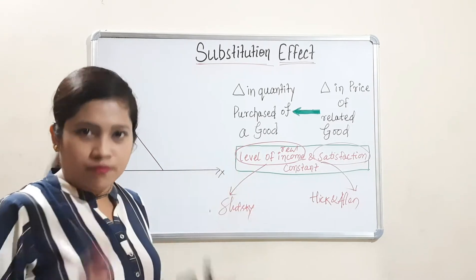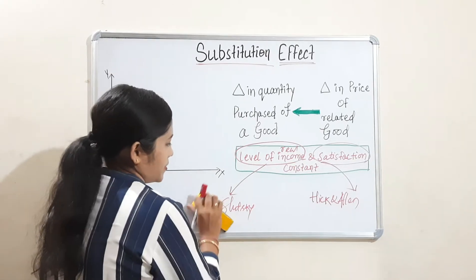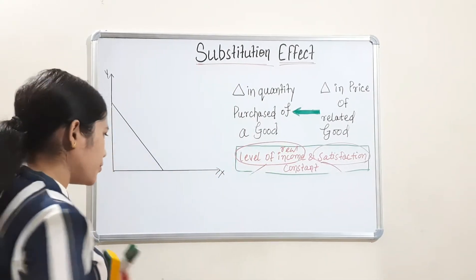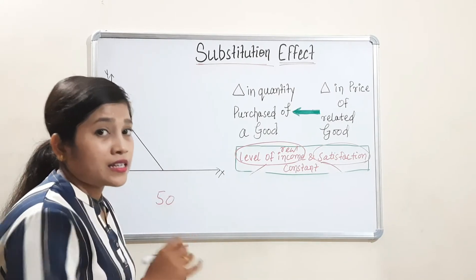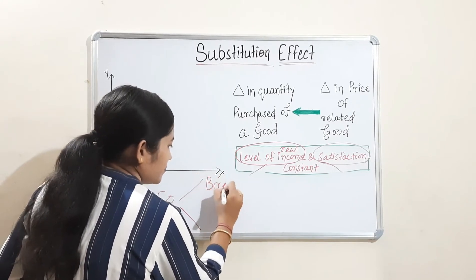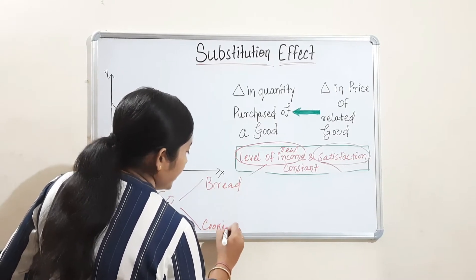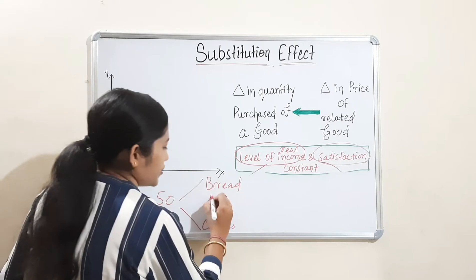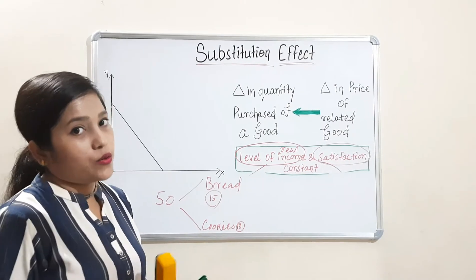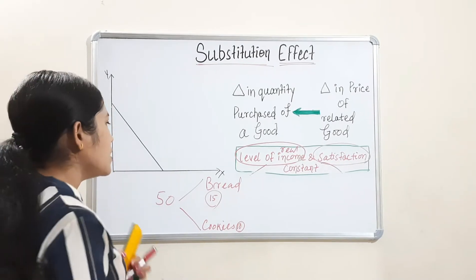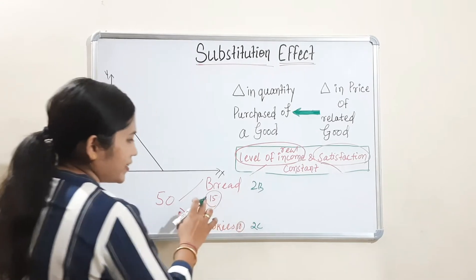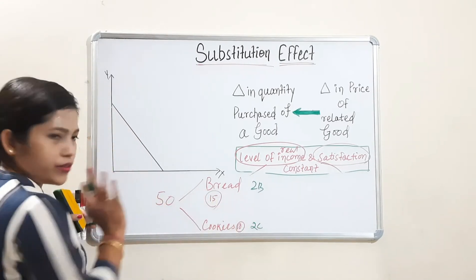Before elaborating further, let me give you a small example. Suppose your income is 50 rupees. With this income you will purchase bread and cookies. Bread price is 15 rupees and cookies price is 10 rupees. So you will purchase 2 bread and 2 cookies — because 2 bread is 30, 2 cookies is 20, totalling 50 rupees.